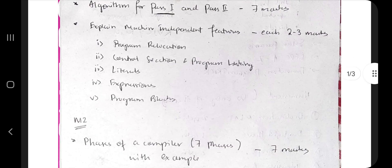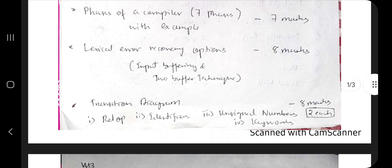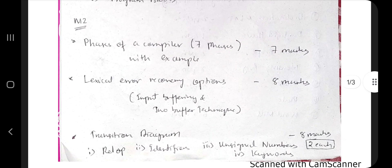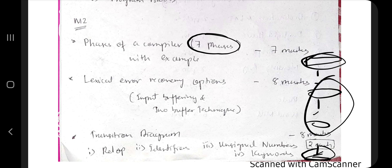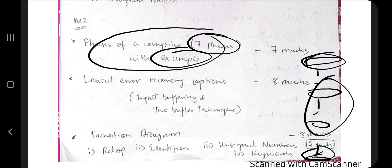In module two, three topics are important. There are seven phases — you go from one phase to the next, and finally reach the output. In between you have five phases. If you remember these five phases using an example — position equals initial times 60 plus rate — the phases of compilation is a very repeated topic and you can get seven marks easily.